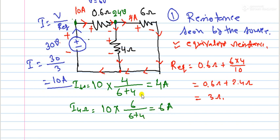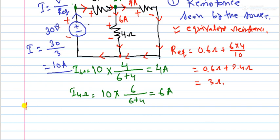The current through the 4 ohm resistor is 10 times 6 divided by 6 plus 4, which equals 6 amperes. The voltage across it is I times R: 6 times 4 equals 24 volts. Now we can calculate power delivered and absorbed.